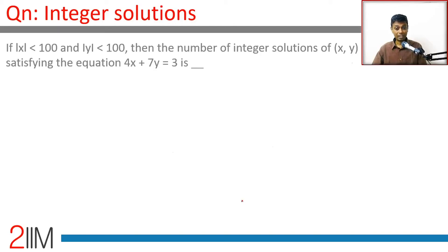If mod x less than 100 and mod y less than 100, the number of integer solutions of (x, y). A wonderful question: 4x plus 7y equal to 3. All of these questions sit on the same idea - find one solution, one integer solution, then we could be through. How will we substitute? Substitute x equal to 1, 0, 1, 2...